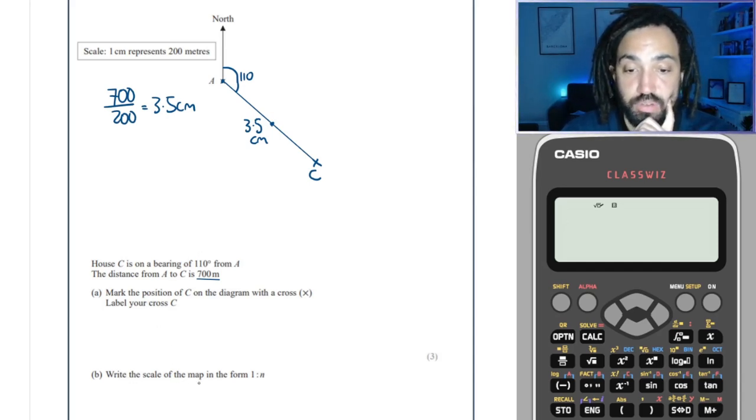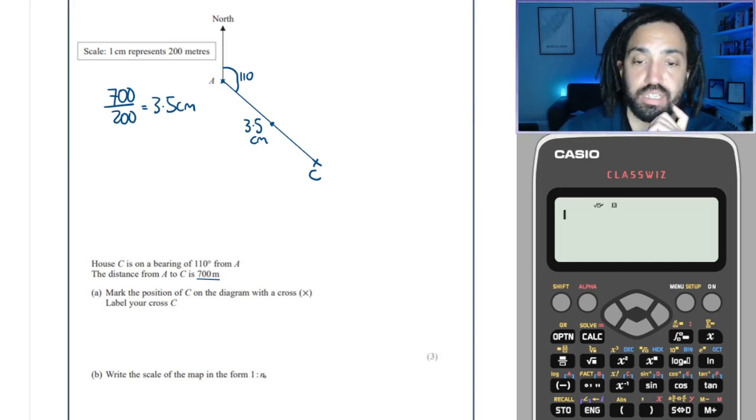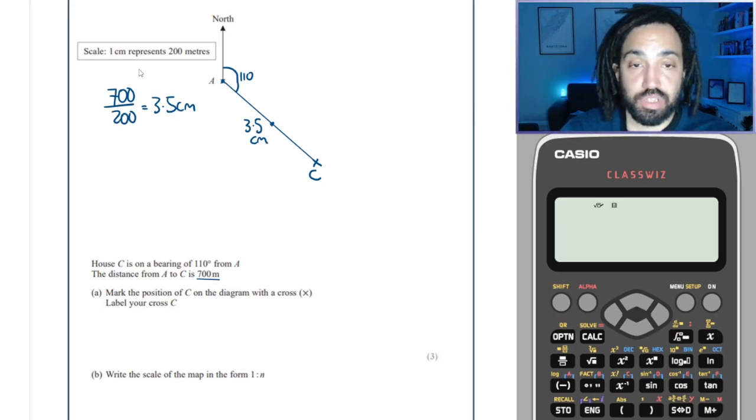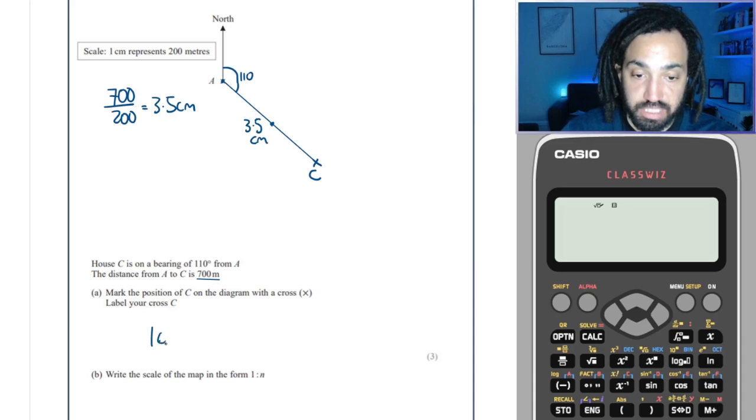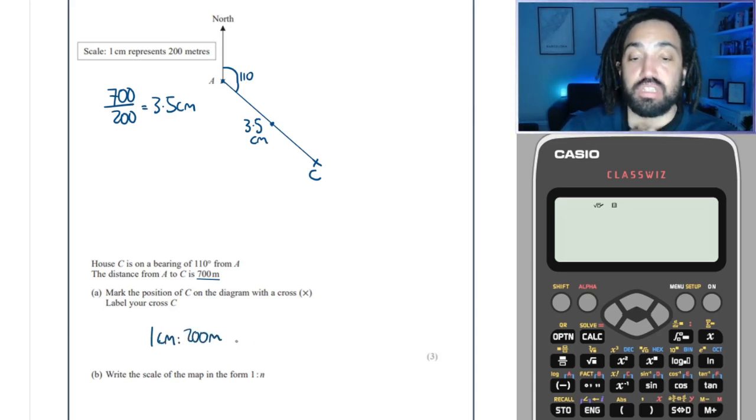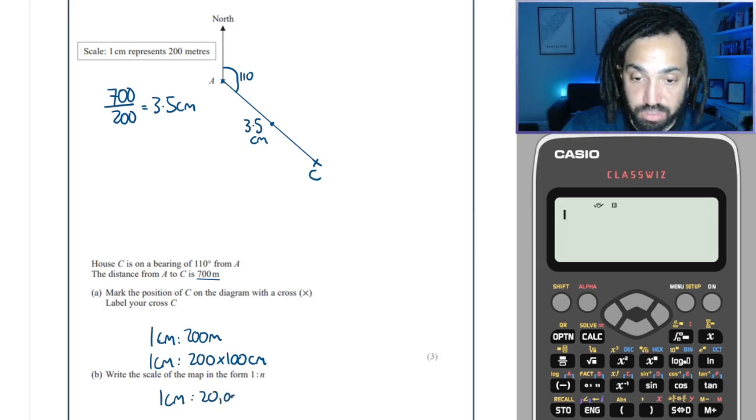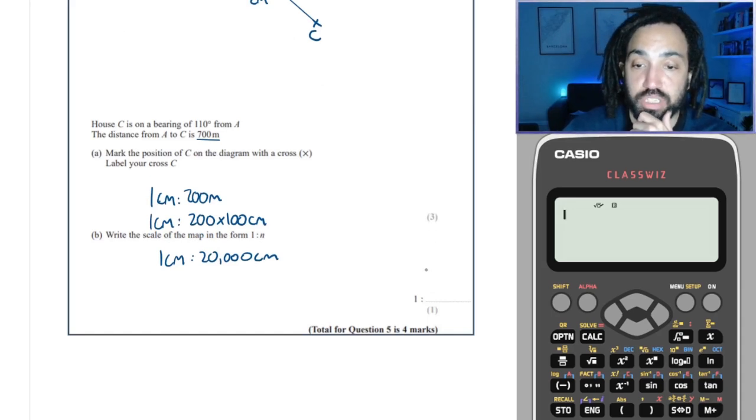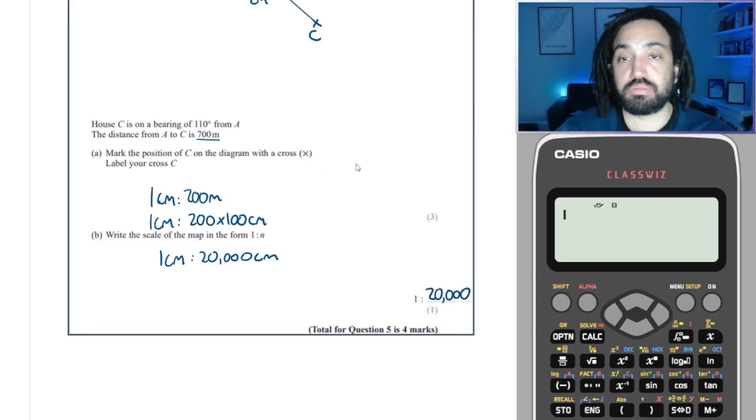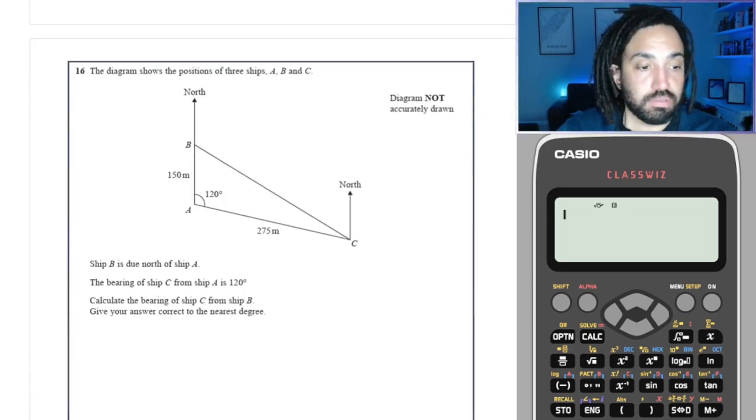Okay, it says write the scale of the map in the form 1 to N. It's not 1 to 20, because the units are different. So we need to make sure the units are the same before we can write it in just a ratio format. So at the moment, we have 1 centimeter to 200 meters, so we need to convert them into the same unit. Let's convert the 200 meters into centimeters, and we need to times that by 100, because there are 100 centimeters in a meter. So we get 1 centimeter to 20,000 centimeters, which means that the scale is 1 to 20,000. Perfect.